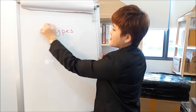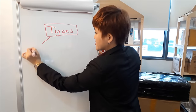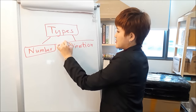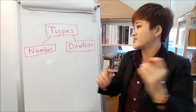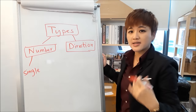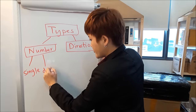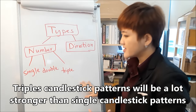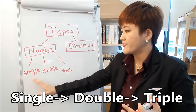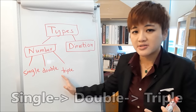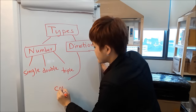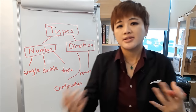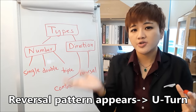When it comes to candlestick patterns there are three main types — you can classify them in different ways. The first way is based on the number of candlesticks: single, double, and triple candlestick patterns. The second way is based on direction. A continuation pattern means the price continues in the same direction; a reversal pattern means the price is going to make a U-turn.